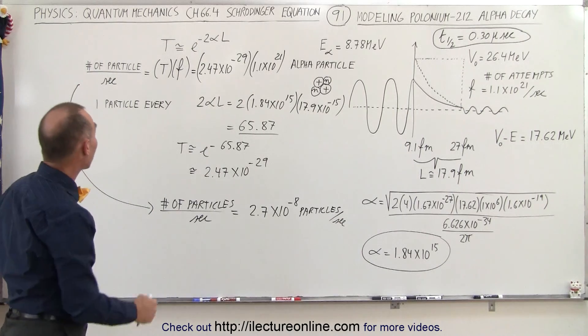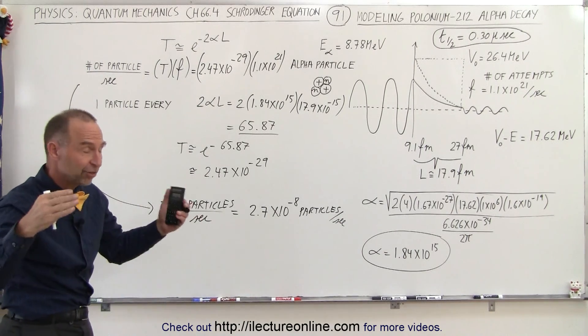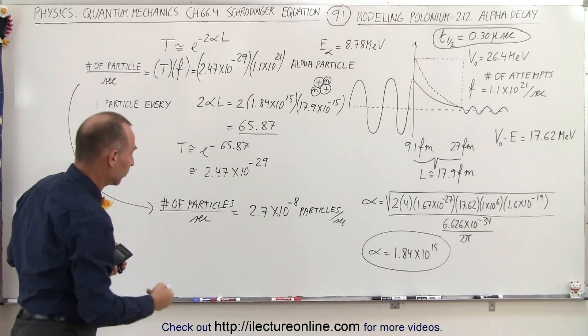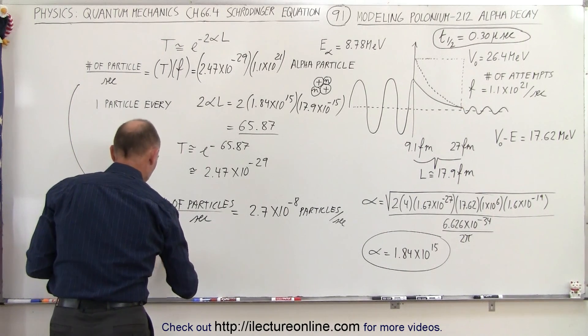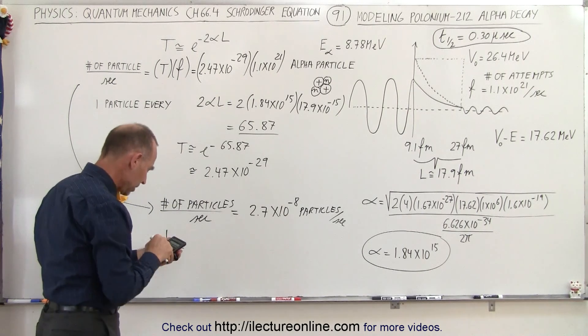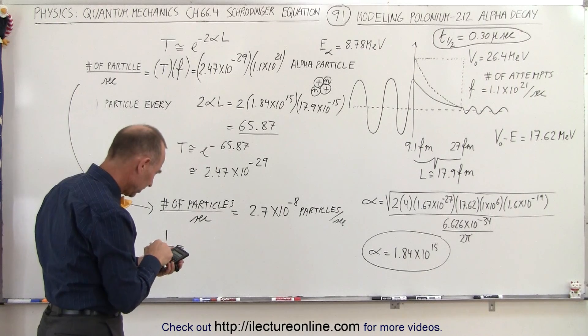If we now take the inverse of that, we get the number of particles, or the number of seconds per particle—the number of seconds between particles making it through the barrier. So we take the inverse of that, 1 over the number, and that's going to be equal to...